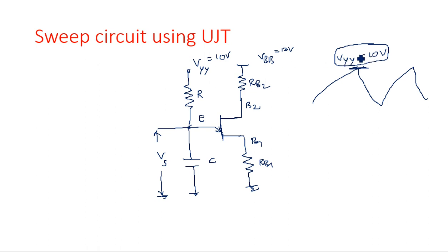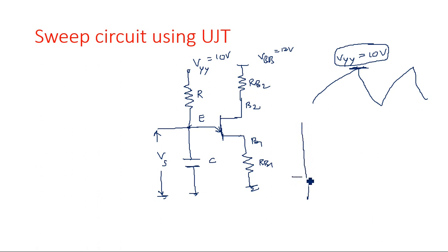Now let us see the operation. Initially, assume the UJT transistor is in the off state and the capacitor is initially uncharged — voltage across the capacitor is zero. I am drawing the output waveform with time on the x-axis and output voltage on the y-axis. There is no input voltage; the DC voltages produce an AC output signal at the oscillator.